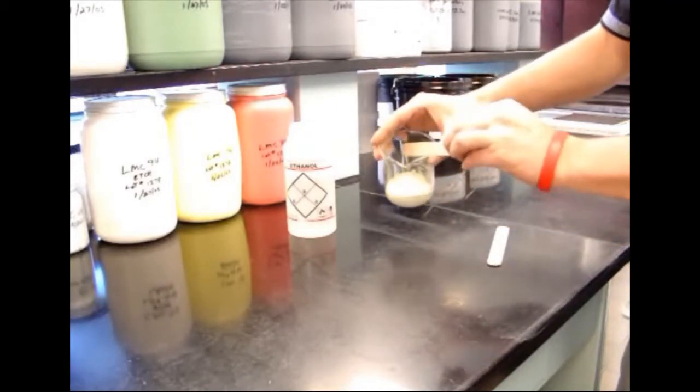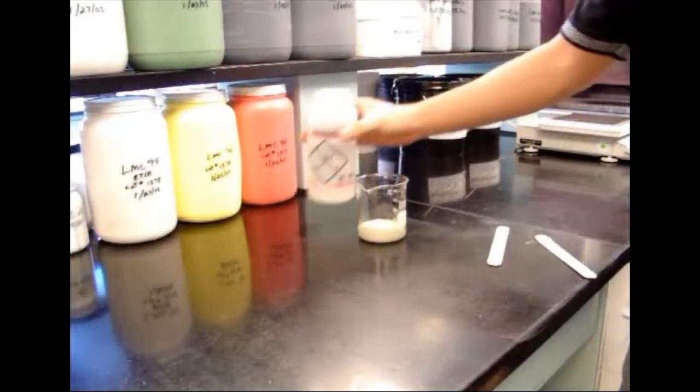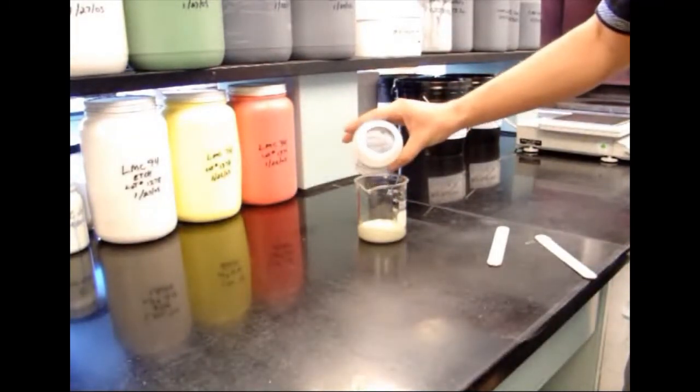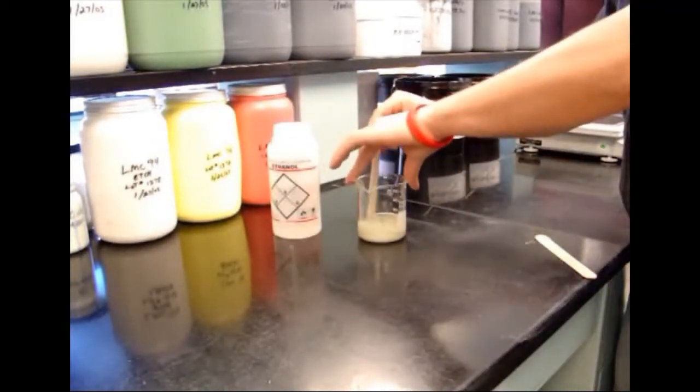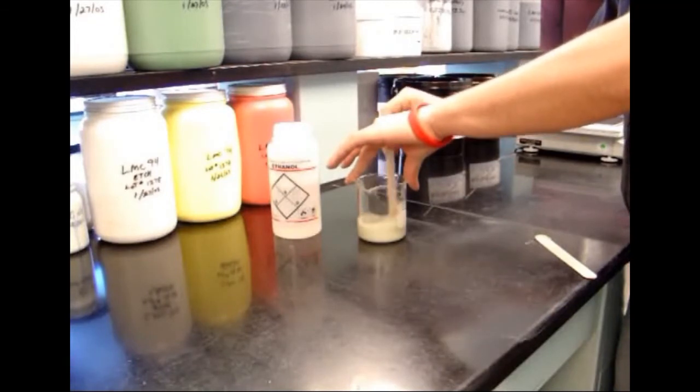Ethanol or denatured alcohol is recommended for thinning. Use one part of ethanol to one part of LMM6000 by volume. Stir the material thoroughly to an almost water-like consistency.